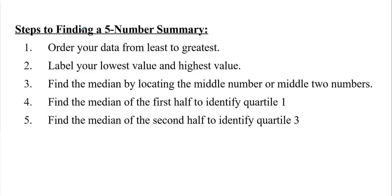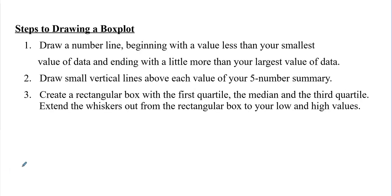I did attach some steps to finding a five number summary — those are located on your notes, so please continue to refer back to them. I'm not going to talk about them now; we're just going to get a glimpse of them and then use these to find the five number summary. Additionally, we have our steps to drawing a box plot, and it will be helpful if you have a graphing calculator. I'm going to use the TI-84.